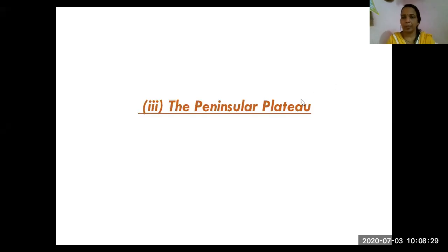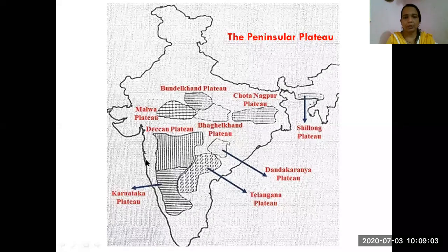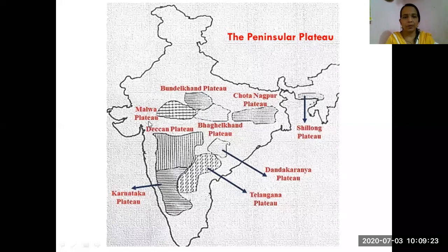The next physiographic division we are going to study is the peninsular plateau. In the earlier parts, we studied the northern plain and the Himalayan region. Now we'll move toward the peninsular plateau. This is one of the oldest regions in the world, not just in India. This region is called a shield — meaning a region which never went under water. The African plateau and the peninsular plateau are both shields in the world.